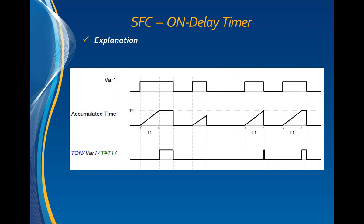The following figure shows the behavior of the on-delay timer. On the top, we have a boolean variable var1, which is used as the input condition of the timer. This timer has a preset value of t1. On the bottom is the output of the timer, and in the middle, the accumulated time of the timer.